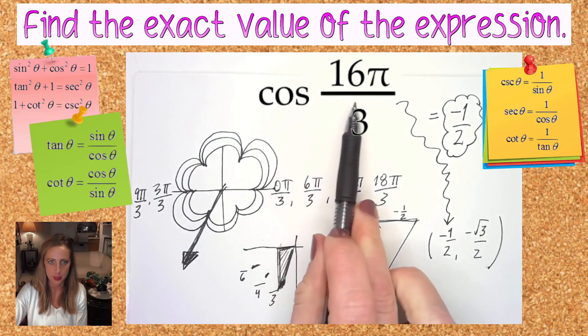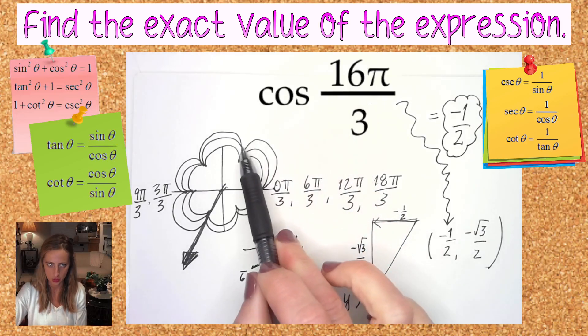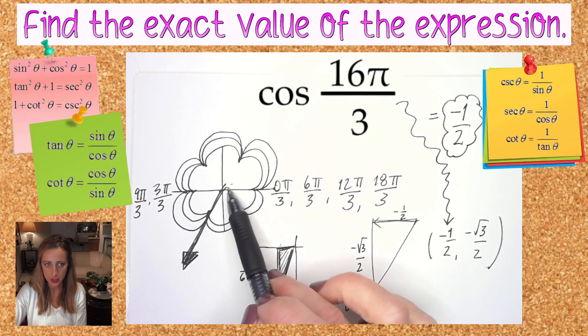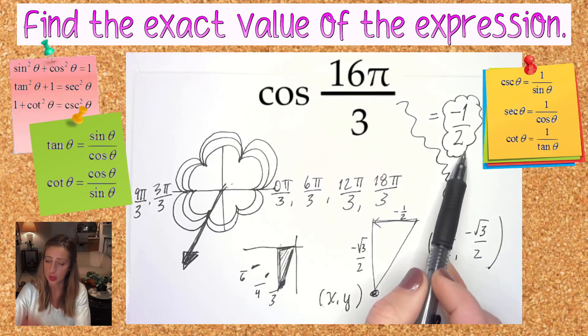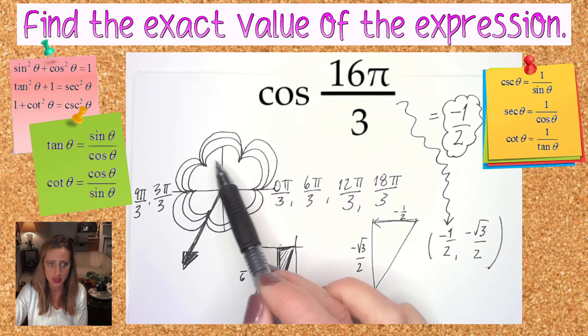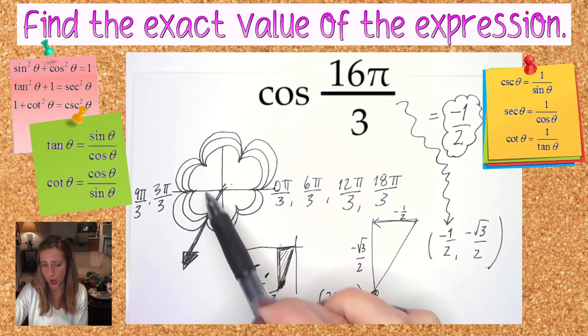Now would this take me this long? Absolutely no, absolutely not. I'm going to say to myself, 16π over 3, if it's over 3, I'm over a little, up a lot. Cosine's the little, so it's either one half or negative one half. You're already down to 50-50.